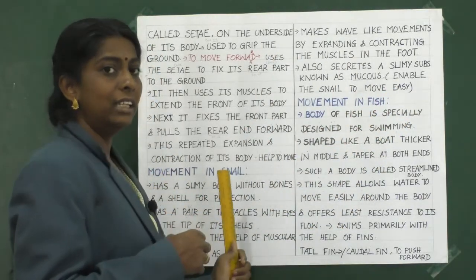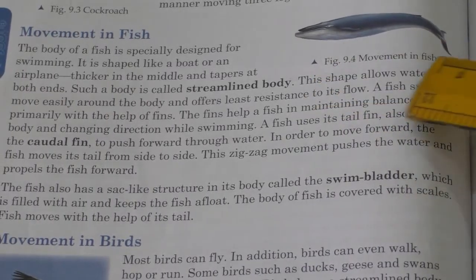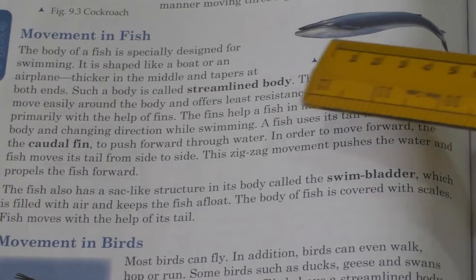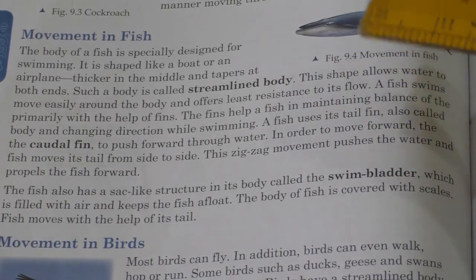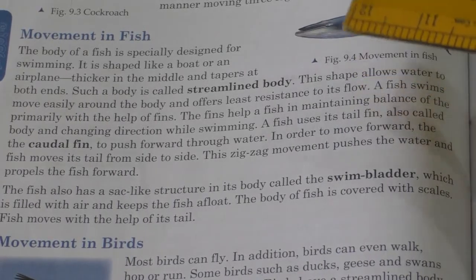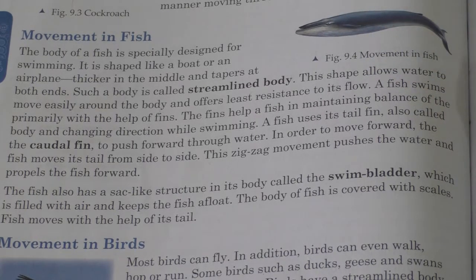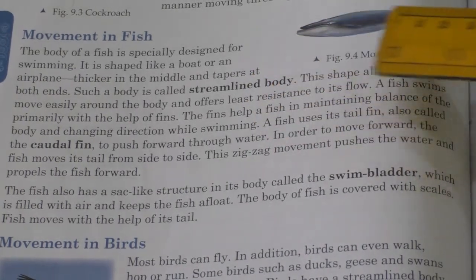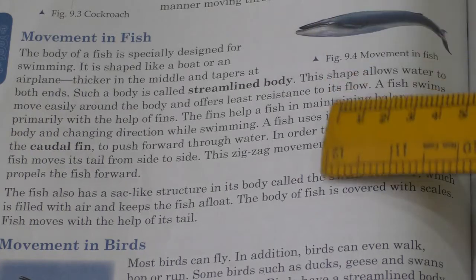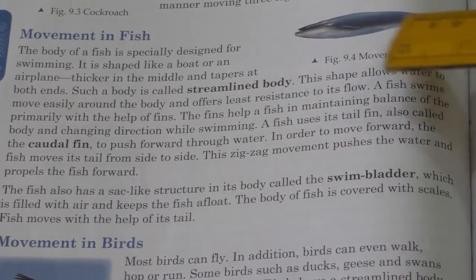Now you can see figure 9.4, movement in fish. The body of a fish is specially designed for swimming. Its shape is like a boat — thicker in the middle and tapering at both ends. Such a body, which is thicker in the middle and reduced in size at both ends, is said to be a streamlined body.